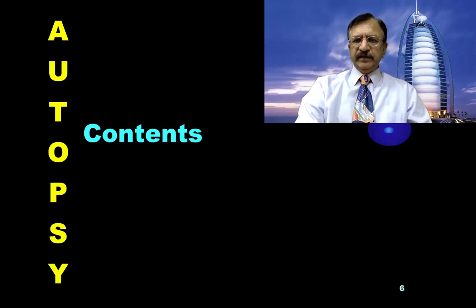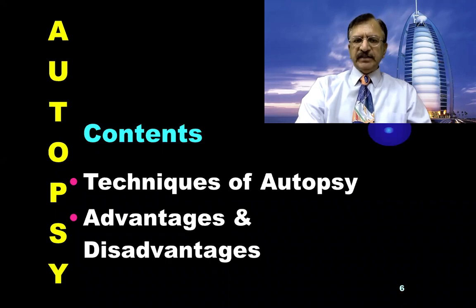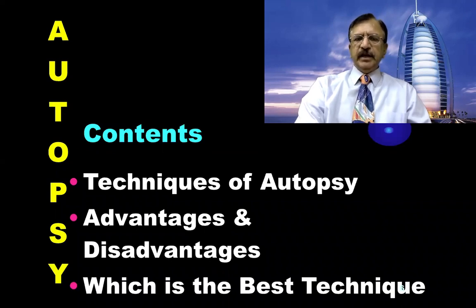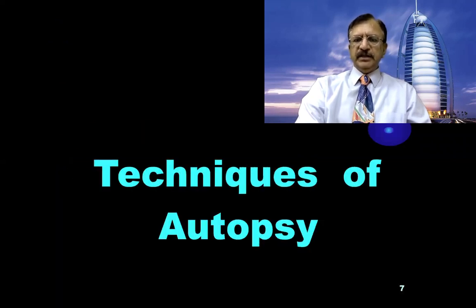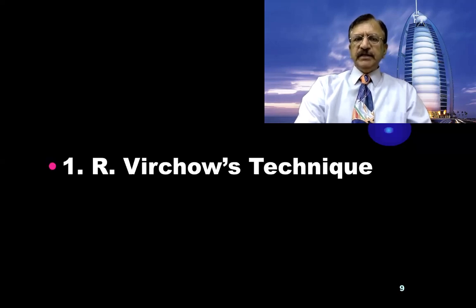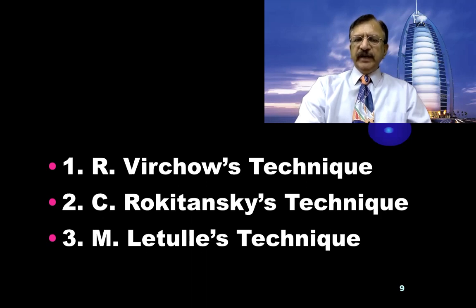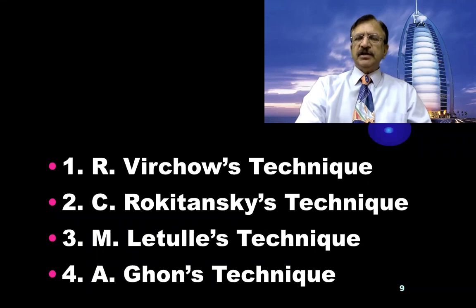The learning objectives and contents of my talk will cover various techniques used for dissecting the body at autopsy, the advantages and disadvantages of various techniques, and which is the best technique used in various types of autopsy. The basic autopsy dissection methods are: number one, Virchow's technique; second, Rokitansky's technique; third, Letulle's technique; and fourth, Ghon's technique.